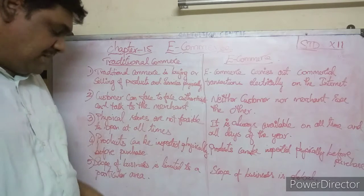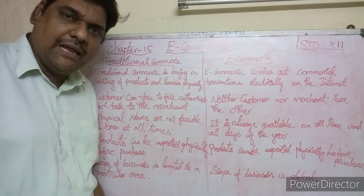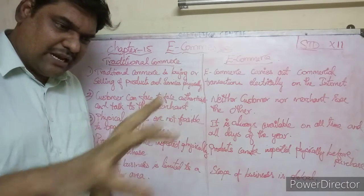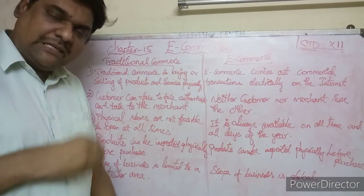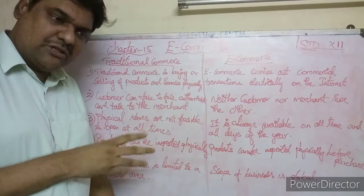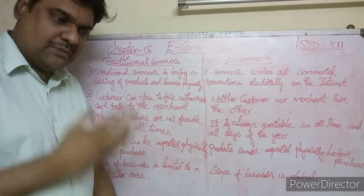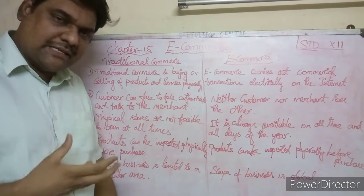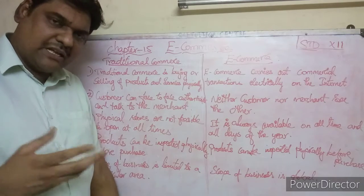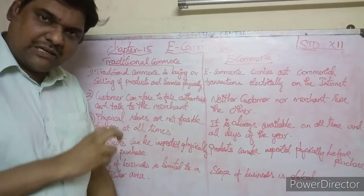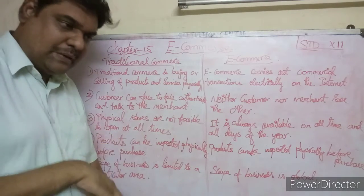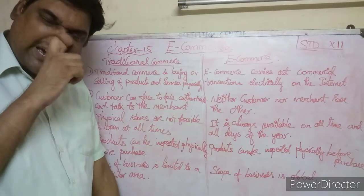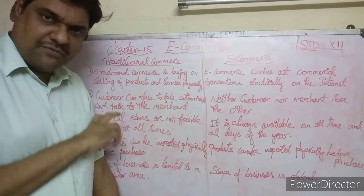In traditional commerce, the scope of business is limited to a particular area. But in e-commerce, it is global — through your website you can host and sell products, and anybody in the world can buy them. So the reach is not limited to just the local area.